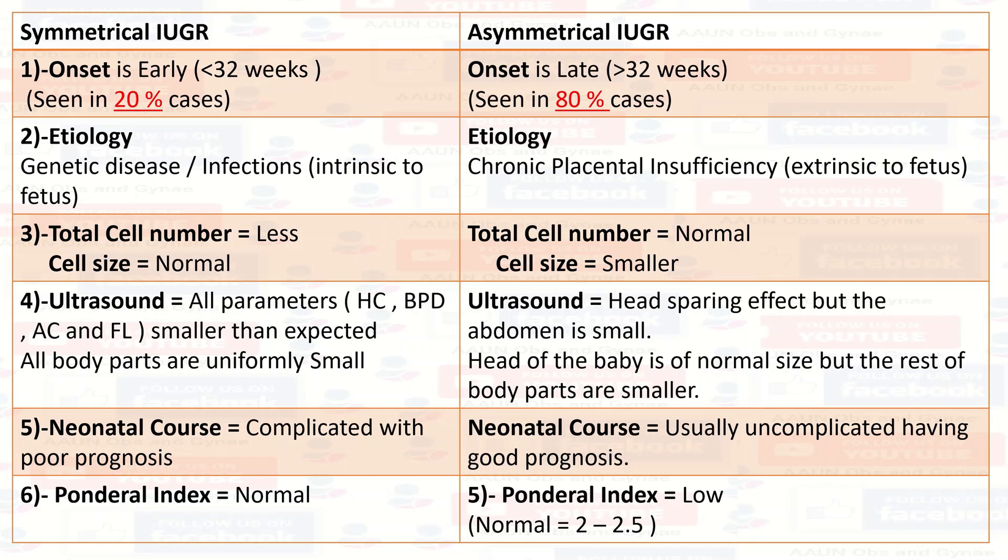Regarding neonatal outcome, the prognosis is poor in symmetrical IUGR, and in asymmetrical IUGR it is usually uncomplicated with a good prognosis. The ponderal index is normal in symmetrical IUGR and low in asymmetrical IUGR.